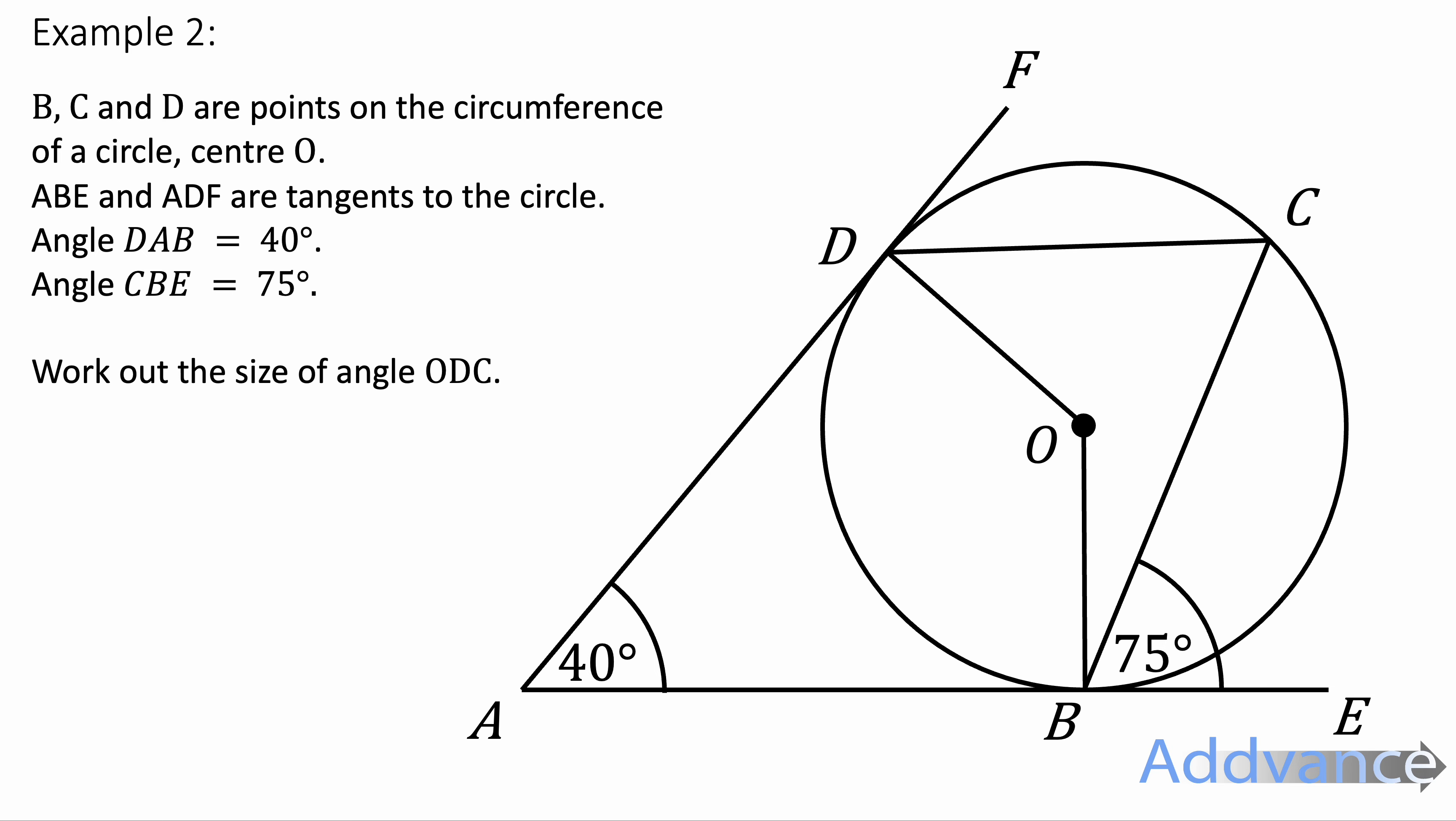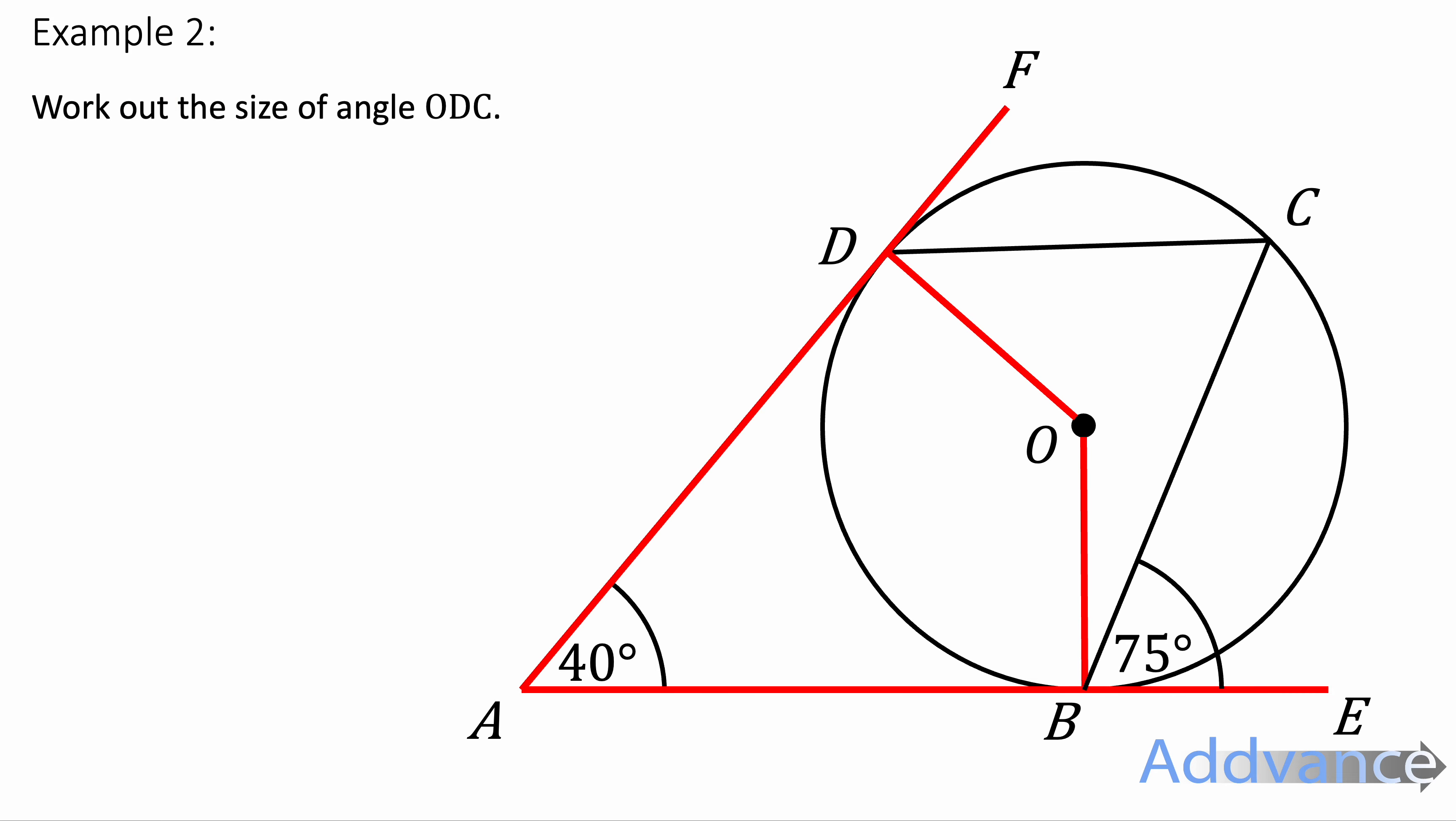Okay. We're trying to find angle O, D, C. So that's the angle between O, D and C. Again, we've got red text on the top. This is all useless information because it's clear from the picture what all this means. So we're good to ignore that.